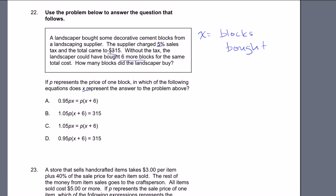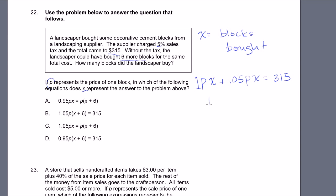The first equation: before tax he bought x blocks at p per block, then he has to pay 5% sales tax on top of that. So p times x plus 0.05 times px equals 315. Combining coefficients, 1 plus 0.05 is 1.05, so 1.05px equals 315.